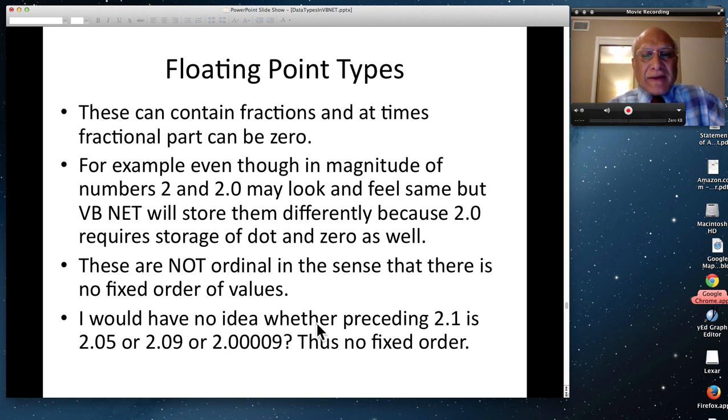How to do mathematics on floating point changes entirely because they don't have fixed order. For example, I would have no idea whether preceding 2.1 is 2.05 or 2.09 or 2.00009. No fixed order. Again, that looks trivial, but it's very important in designing the mathematics for the numbers, floating point numbers actually.